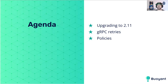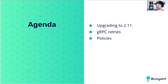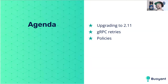The agenda today is very straightforward. We are going to do an upgrade to 2.11 — I'm pretty excited because this is the first workshop we've done following a stable release, and it's going to be a fun thing to do. Credit goes to our marketing team. We'll also take a quick look at gRPC retries, which is really an extension of being able to retry requests with post bodies.